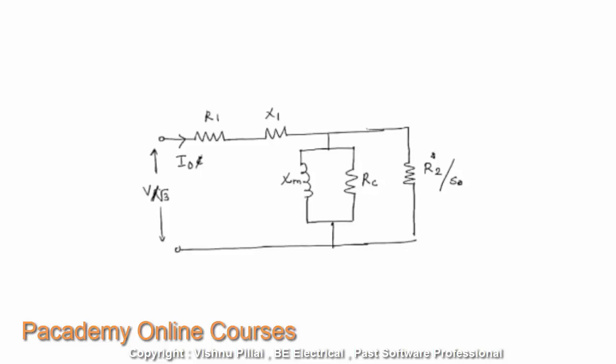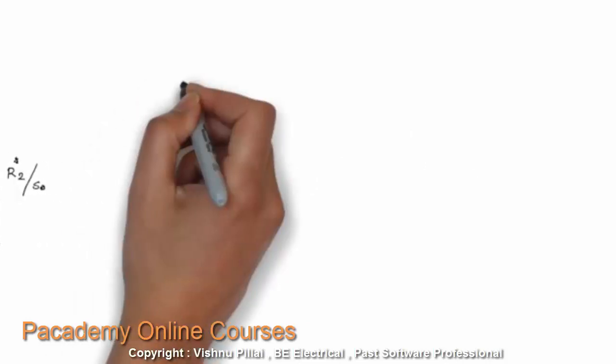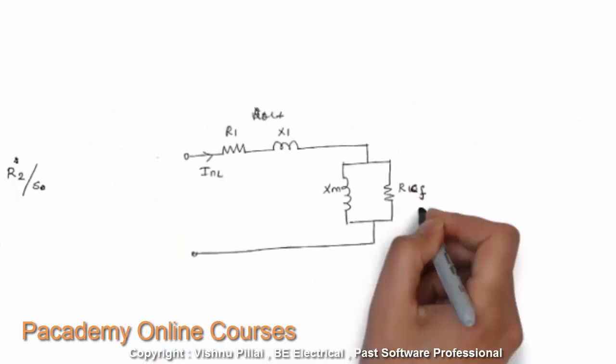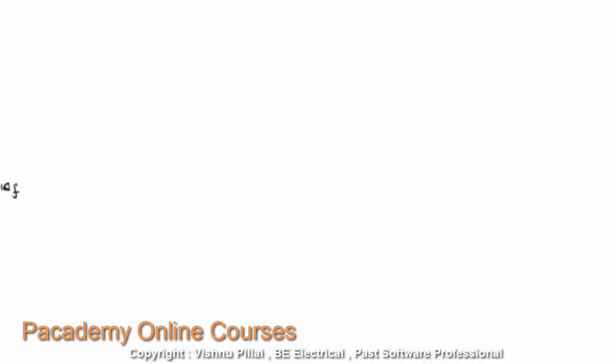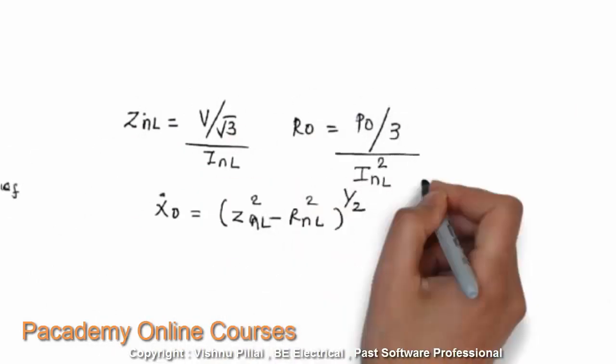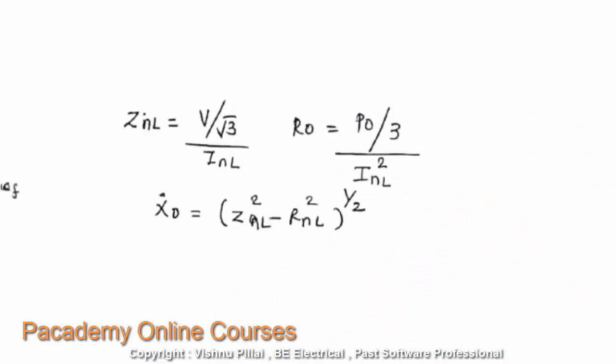The equivalent circuit can be written where V/√3 is the power supply per phase, I0 is the no load current measured by the ammeter, R1 and X1 are the resistance and reactance of the stator winding per phase, XM is the magnetizing component, RC is the core loss component, and R2/S is the rotor resistance part. The impedance of the no load test is given by (V/√3) / INL, which is simply V divided by I from Ohm's law.